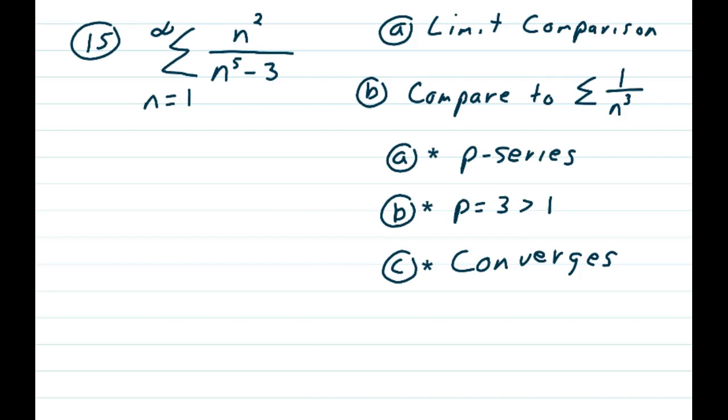Looks like a p-series, so it's a limit comparison, compared to 1 over n cubed because n squared over n to the fifth reduces to 1 over n cubed. So this is a p-series mini-proof.